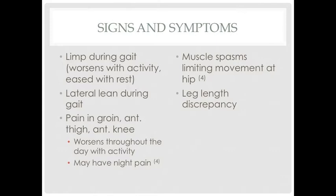The first symptom noticed is often limping and lateral lean while walking, which is usually painless. The limp may get worse after activities and improve with rest. Other symptoms may include hip stiffness limiting hip movement, pain referred to the knee, limited range of motion, thigh or groin pain that does not go away, shortening of the leg or legs of unequal length, and muscle loss in the upper thigh.